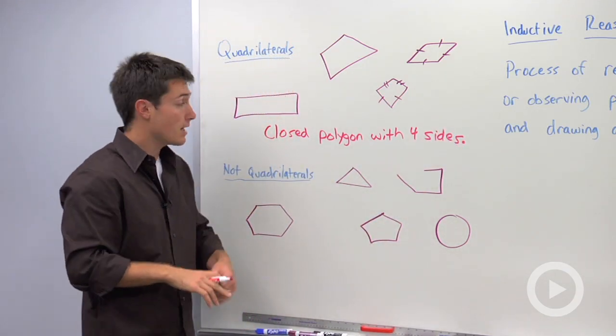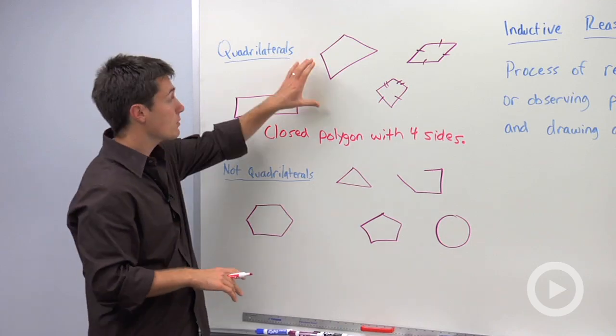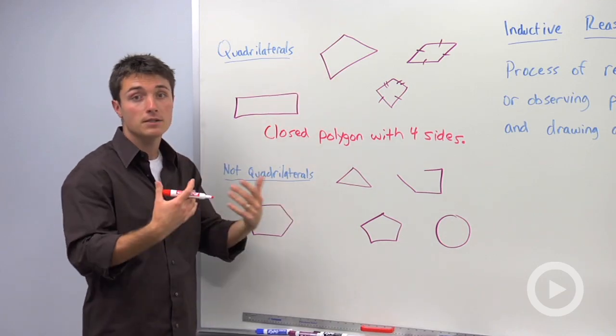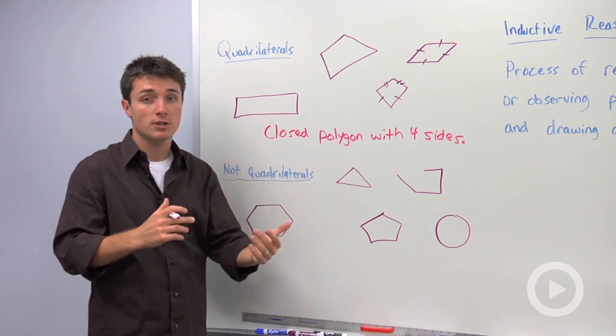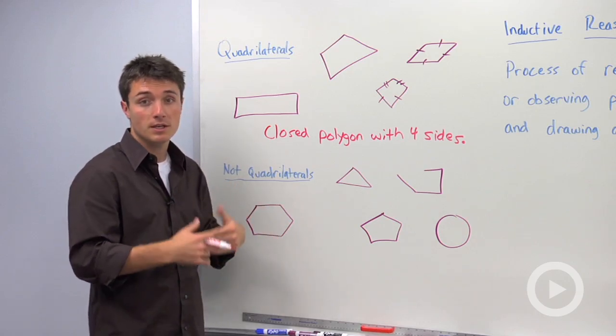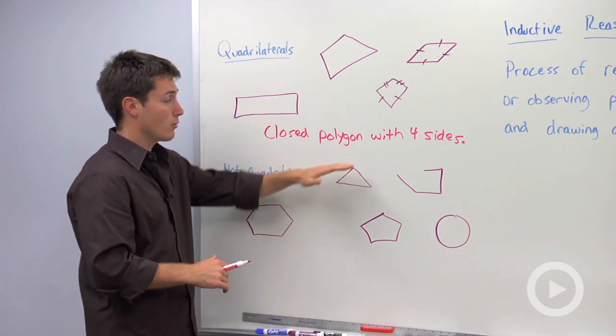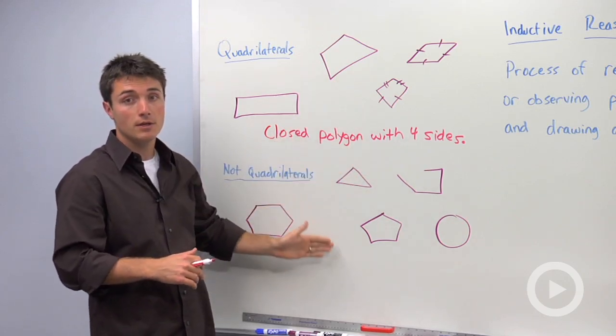So using inductive reasoning, I came up with this definition. All I did was look at patterns and make a conclusion. So the way that you're going to differentiate this from deductive reasoning is that here we're not justifying our reasonings. We're just observing and making a conclusion.